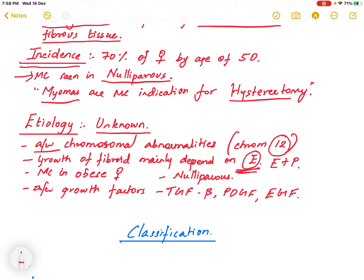Fibroids are most commonly seen in obese and nulliparous females. They are also associated with growth factors such as TGF-beta, platelet-derived growth factors, and epidermal growth factors.